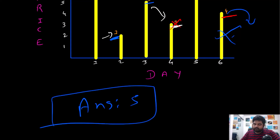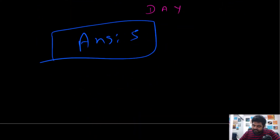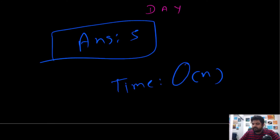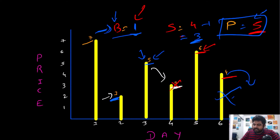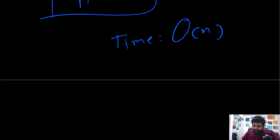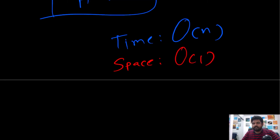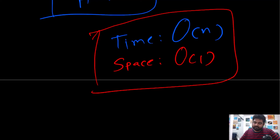This answer works perfectly — it's the most desired result. The time complexity is O(n) because we complete everything in a single iteration. The space complexity is O(1) because we only use a couple of extra variables. This is a very efficient approach: O(n) time and O(1) space.